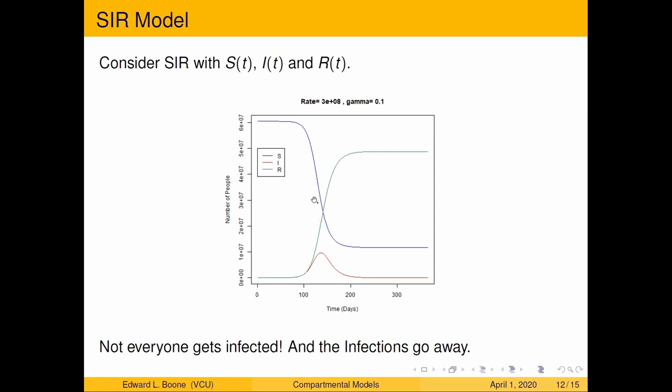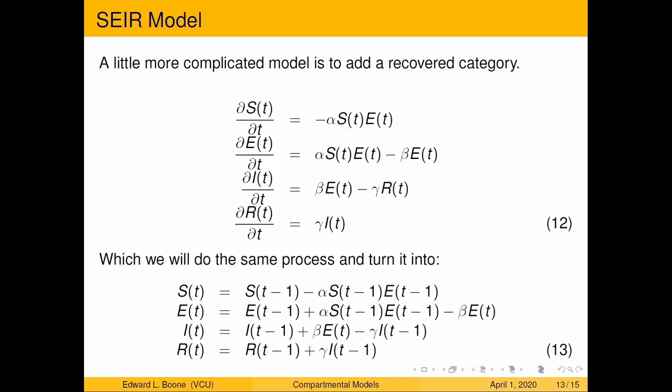So this interaction that we're talking about, that alpha, is what we're trying to change in order to keep people from getting exposed to this or infected.